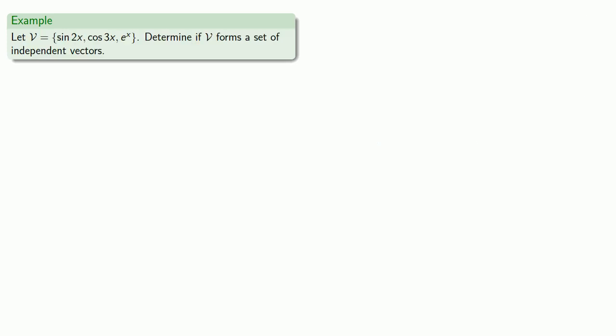If the vectors are polynomial functions, we don't actually need the Wronskian, because a linear combination of polynomials equal to zero corresponds to a system we can solve directly, albeit with some difficulty. A more important use of the Wronskian occurs when our functions are not polynomials. For example, let's take the set of functions sin(2x), cos(3x), and e^x, and determine whether these form a set of independent vectors. We set up our system of equations by differentiation.